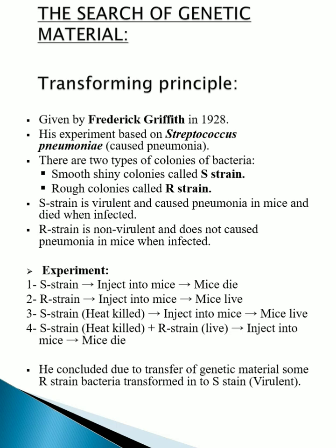The transforming principle was given by Frederick Griffith in 1928. He performed the experiment on Streptococcus pneumoniae, the bacteria which causes pneumonia. This bacteria has two strains: S strain and R strain. S means smooth and virulent form which causes disease, and R means rough and non-virulent form which does not cause disease.